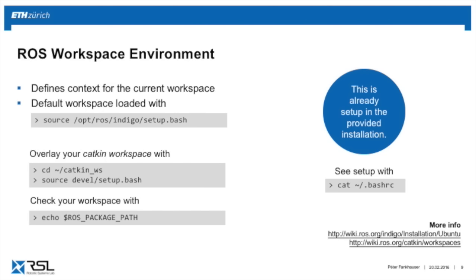One important element is the ROS workspace environment, which defines the context of where you're working. There's a standard installation environment. Importantly, you can overlay these environments. On your PC we've already pre-installed one set up in the standard Catkin workspace folder. By default, whenever you open a console on the virtual machine we provided, it loads the standard workspace. You can check the environment with a command and also see how we set up your PC for future reference.